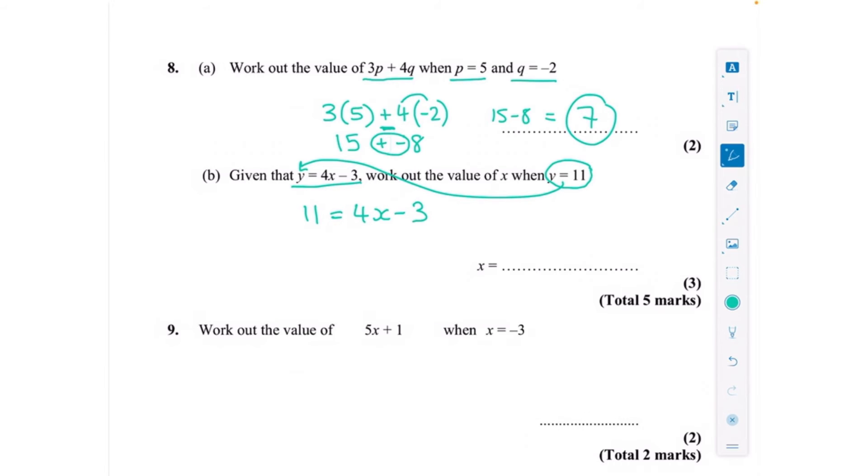When we solve equations I like to put a dotted line, and what we do to one side we need to do to the other. So the first thing we're going to do is add 3 to both sides because that will get rid of the minus 3. So 14 equals 4x. And now we know that 4x means 4 lots of x, so the opposite of timesing by 4 is dividing by 4. So I'm going to divide both sides by 4 and that will just get me one lot of x.